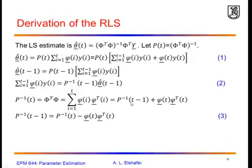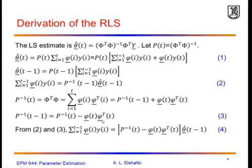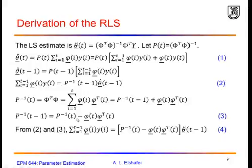This equation can be rearranged so that we write the inverse of P at t minus 1 as the inverse of P at t minus phi times phi-transpose. Using equations 2 and 3, we can write the summation from 1 to t minus 1 by substituting P inverse of t minus 1 with P inverse at t minus phi-transpose of t times phi-transpose of t. This term is P inverse of t minus 1 times the parameter estimate theta-hat at t minus 1.